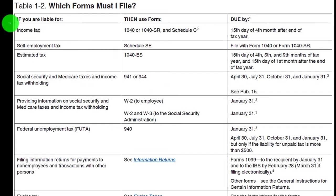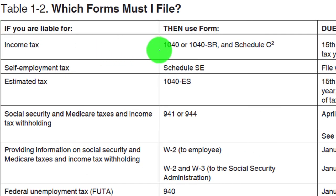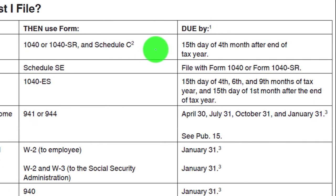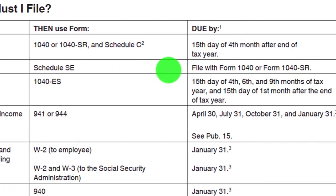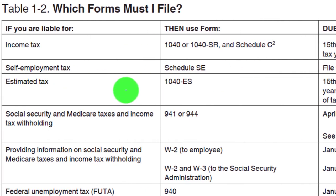Which forms must you file? If you're liable for income tax, you file the Form 1040 or 1040-SR, due April 15th (April 18th in our case). For self-employment tax, that's the Schedule SE, filed with the Form 1040. For estimated tax, that's the Form 1040-ES. If you have a Schedule C, you need to make estimated tax payments during the year unless you also have W-2 income with sufficient withholdings.